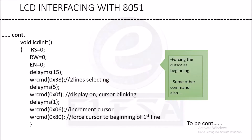The next function is LCD_init. In LCD_init, rs, rw, and en are initially forced to 0, and then we give some initialization commands. We start with delayms 15, then write command 0x38 — that is, we are selecting both the rows.